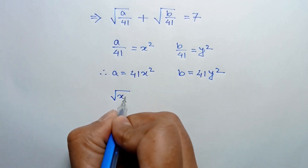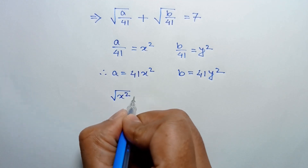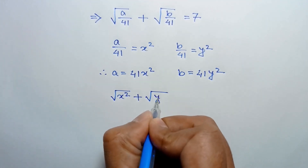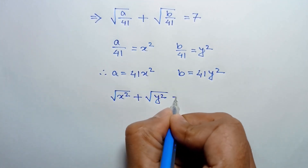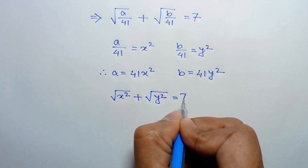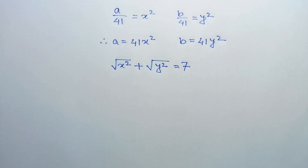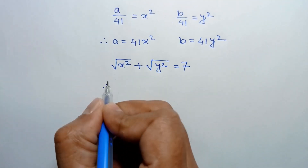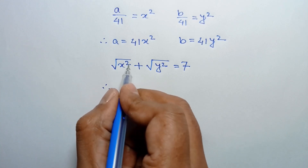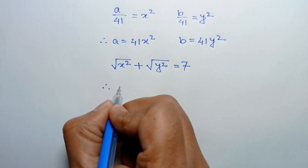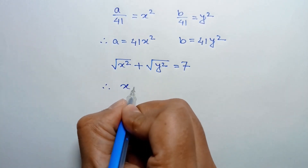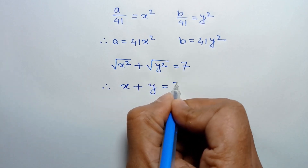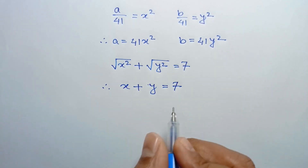Substituting back, square root of x squared plus square root of y squared equals 7. The square roots and squares cancel, so we get x plus y equals 7.